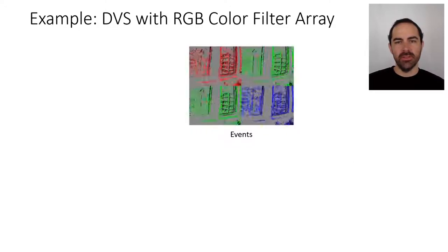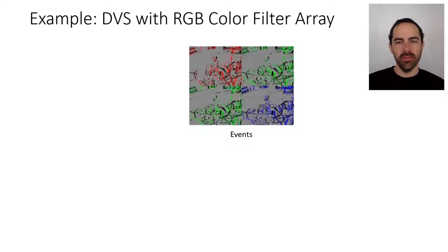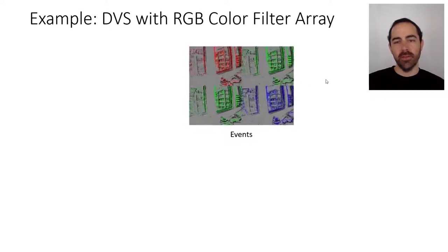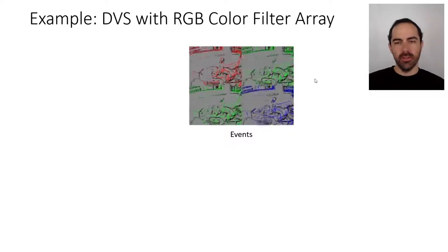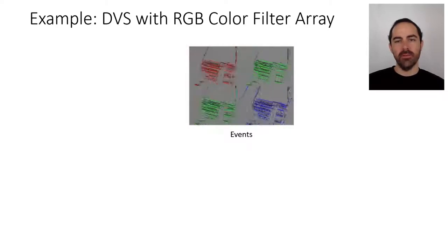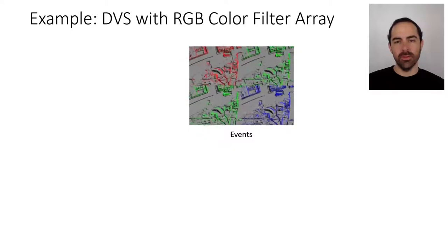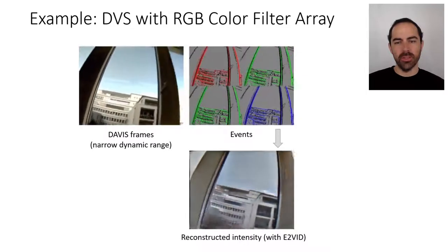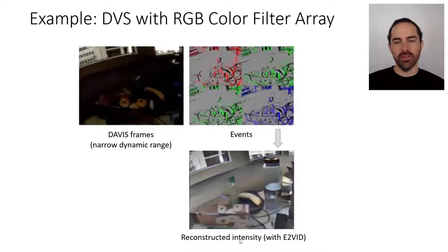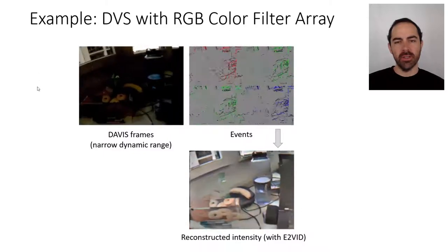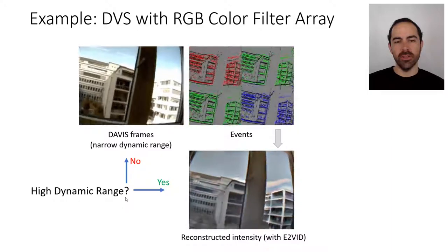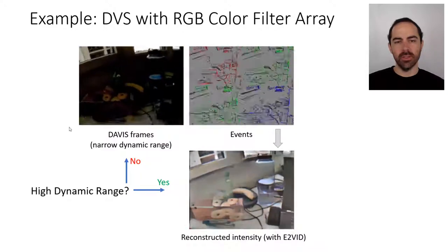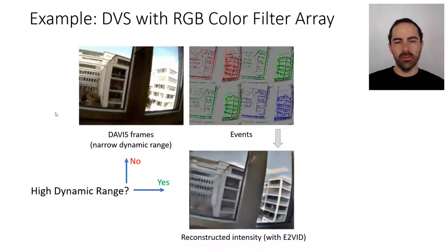This is an example of DVS events with an RGB color filter array on top of the pixels. The red, green, and blue means that there is a Bayer filter array on top of the pixel array, and therefore different wavelengths arrive at every pixel. From these events, with some algorithm, we could reconstruct the intensity and compare to the output of a standard camera. We can ask: are they HDR, do they have high dynamic range? Yes — here we can see inside and outside the room, whereas that's not possible with a single exposure time using a standard color camera.